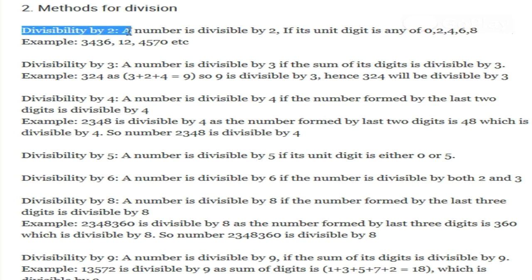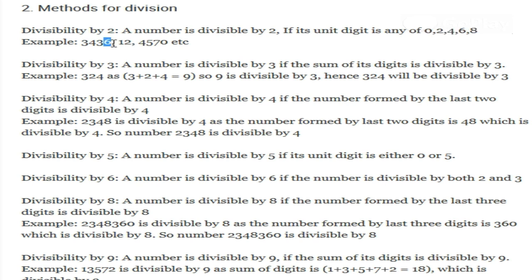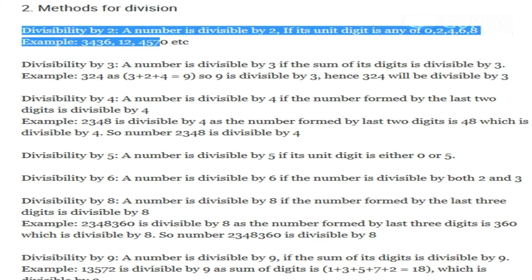To check if any number is divisible by 2, it's quite simple. There should be an even digit at the end of the number. If we have any even digit at the end of the number, then that number will be divisible by 2.